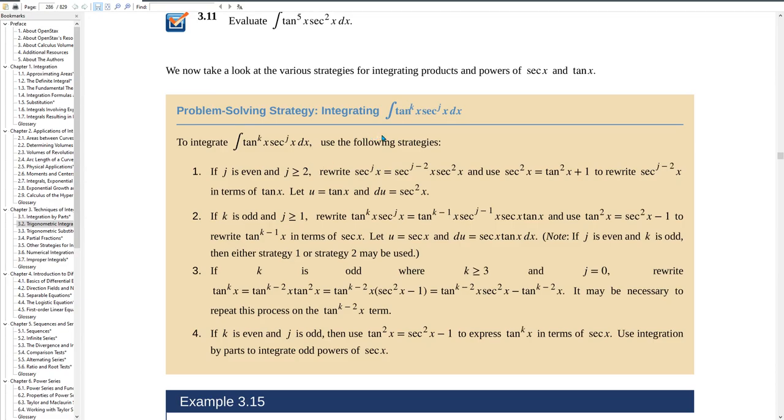For sine and cosine integrals, you want one of them to be an odd power. Tangent and secant are a little bit different—you actually want even powers because the derivative of tangent is secant squared, and that's what we're going to exploit here. The derivative of secant is secant tangent, so derivatives work in a slightly different way for tangent and secant compared to sine and cosine.